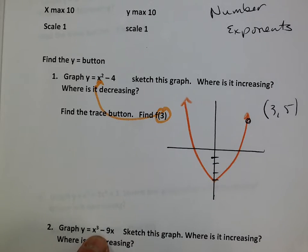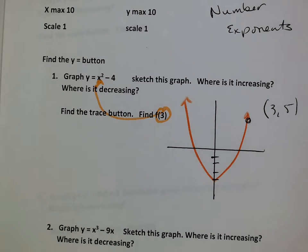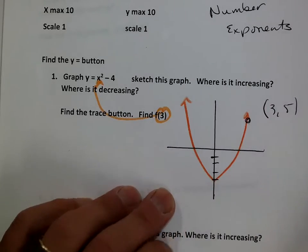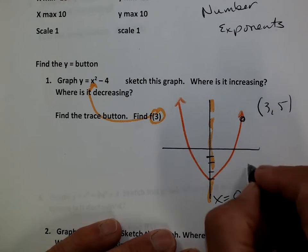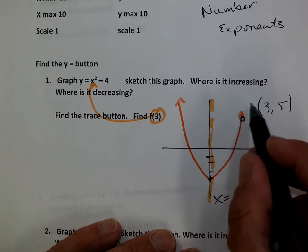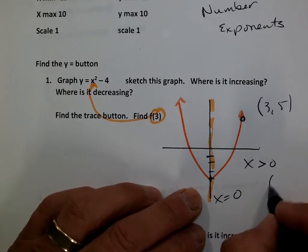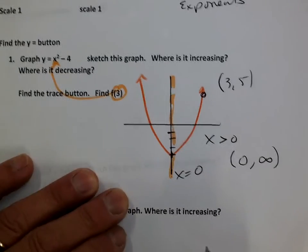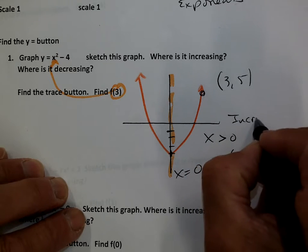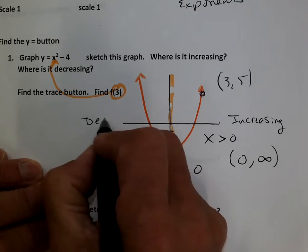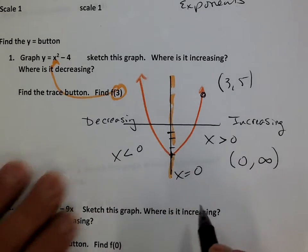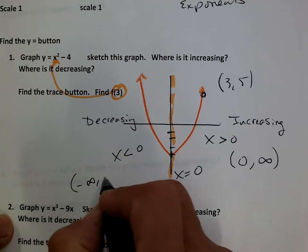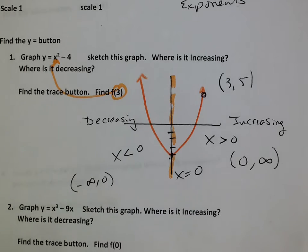Now, increasing and decreasing — let's take a look. The line of symmetry is right there, right through the middle, connected at x equals 0. So increasing is where x is greater than 0 — from here it goes uphill. In interval notation, that's 0 to infinity. Decreasing is where it's going downhill, where x is less than 0, or interval notation negative infinity to 0. At 0, it's neither increasing nor decreasing — it's right at the bottom of the hill.